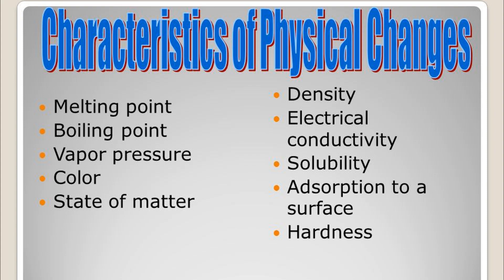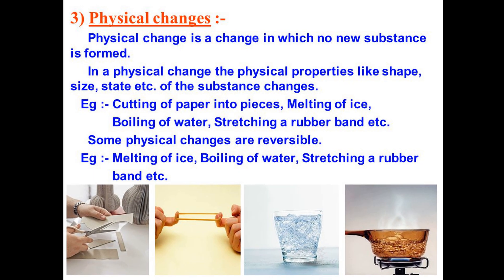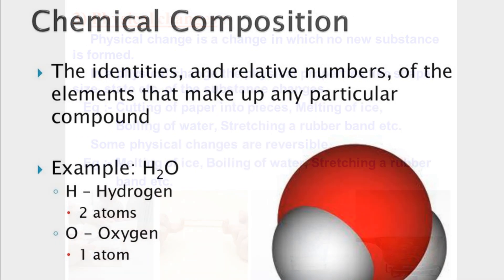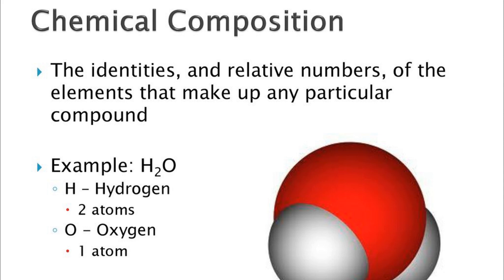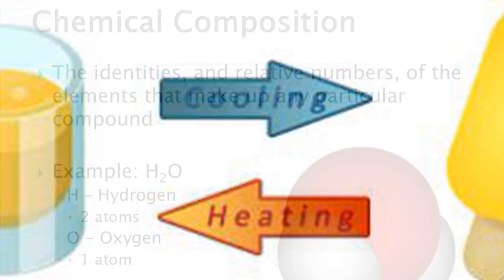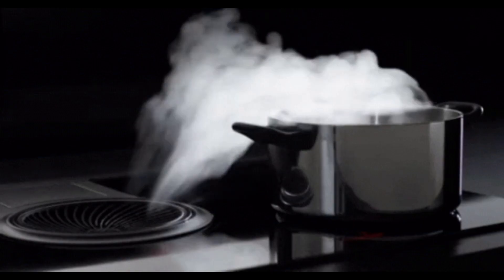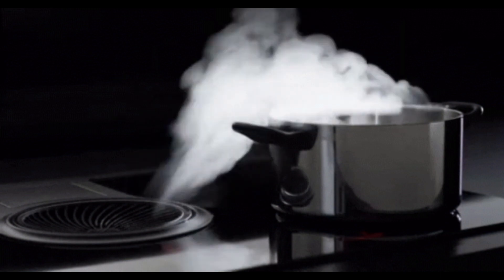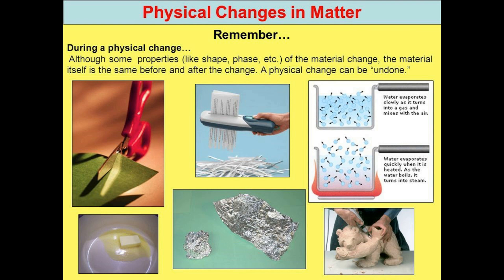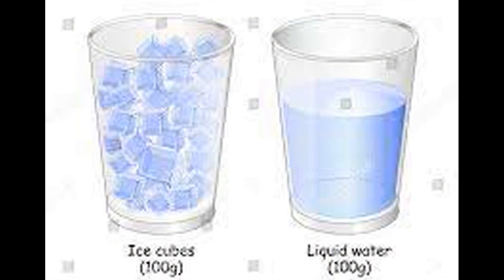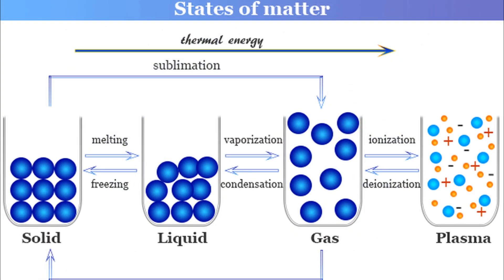The characteristics of a physical change can be summarized as follows. Number one, no new substance is formed. Number two, there is no change in the chemical composition of the original substance. Number three, the change is temporary and it can be reversed by reversing the conditions. Number four, the change is only in the state, size, shape, color, texture or smell of some or all of the substances. Number five, there is no change in the mass of the substance. Number six, there is usually no loss or gain of energy as a result of physical change.